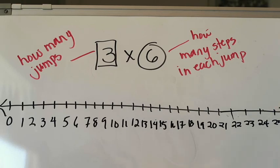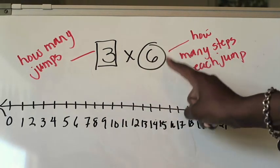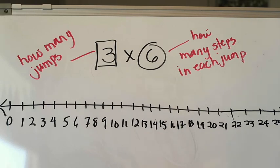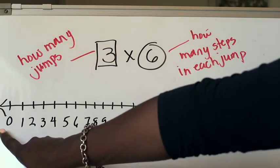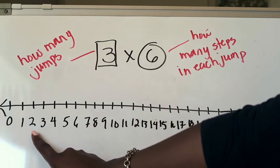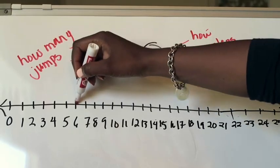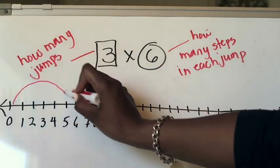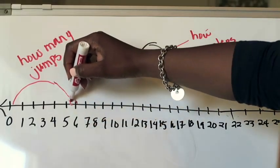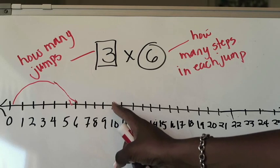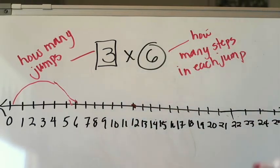Once I have that figured out it becomes pretty simple. I need to make three jumps with six steps in each jump. I'll start at zero and count six steps for my first jump: one, two, three, four, five, six — I put a little dot at six to mark the end of that jump and draw my arc. Then I count six more for my second jump: one, two, three, four, five, six — landing at twelve, where I mark the end of my second jump.